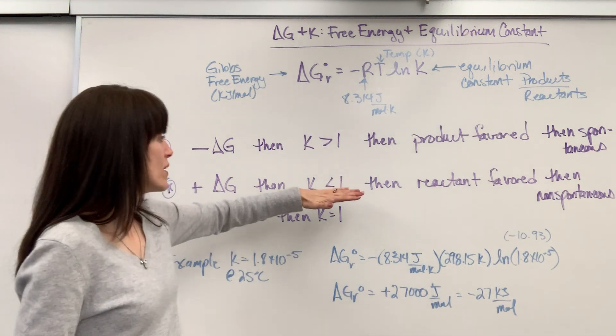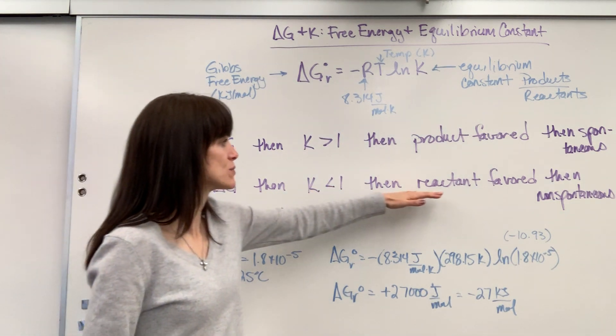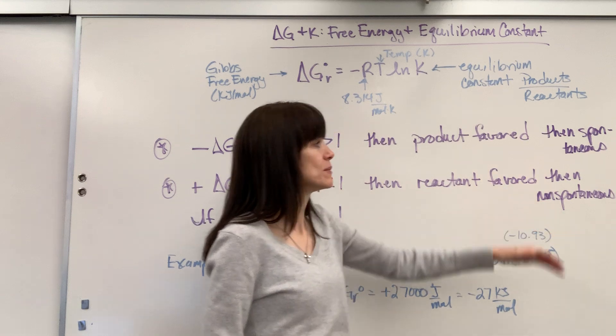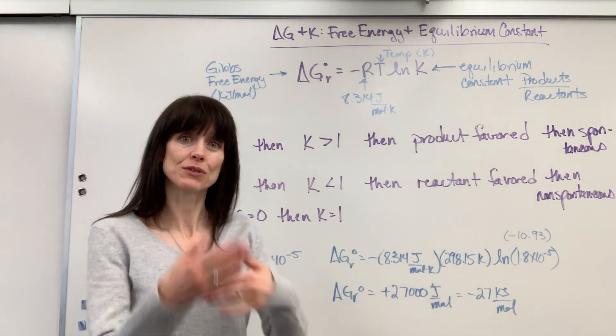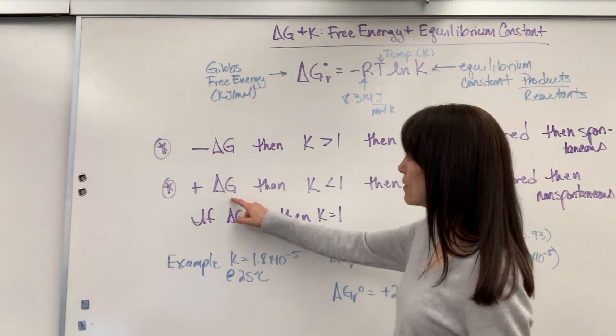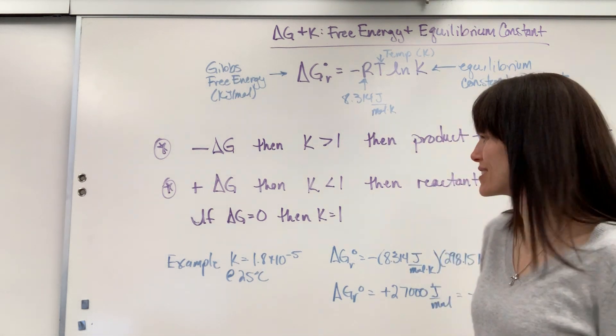So when I have a value less than 1, I know that's reactant favored, more reactants than products, and it means it's non-spontaneous. It's going to require energy, and sure enough, positive delta G requires energy.